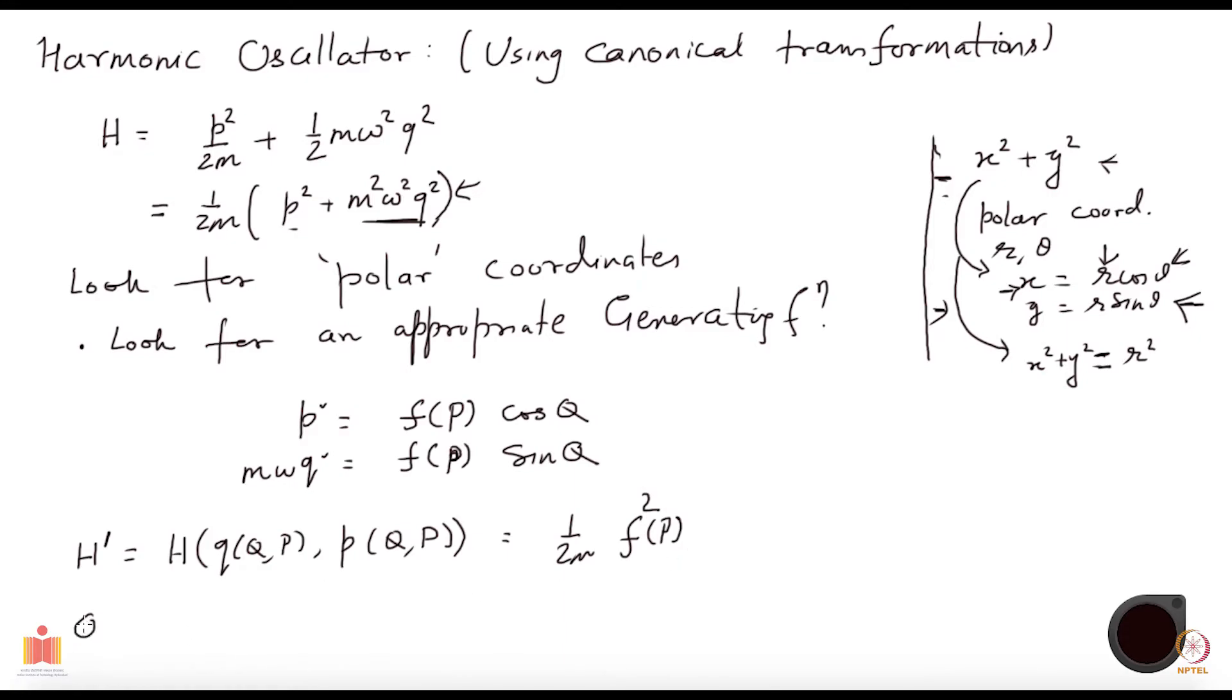Note that the Q, which I will call as angular coordinate, because it is very analogous to what you have here, is cyclic. It is cyclic because it does not appear in the Hamiltonian, which is nice, because if that is cyclic, then the conjugate momentum would be conserved, it will be a constant. That is why I want to do this.